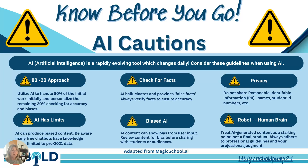A couple of cautions — things you need to know before you go as we start down this highway of AI. AI is rapidly evolving; literally, as we're speaking, changes are coming out continuously. I'm sure this presentation will be updated by the time we start our program in July. With AI, always remember an 80-20 approach. When you're getting that data, you always need to vet it to make sure that it is accurate and check for facts.